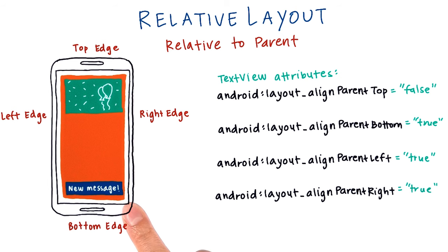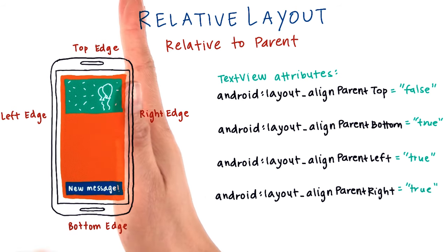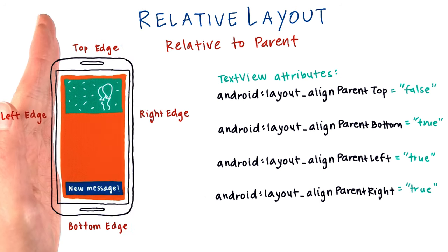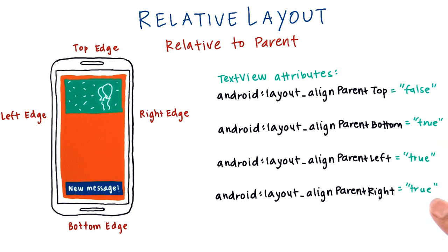And for this text view down here, it's aligned to the parent's bottom edge, right edge, and left edge. So alignParentBottom would be true, alignParentLeft would be true, alignParentRight would be true, but alignParentTop would be false.